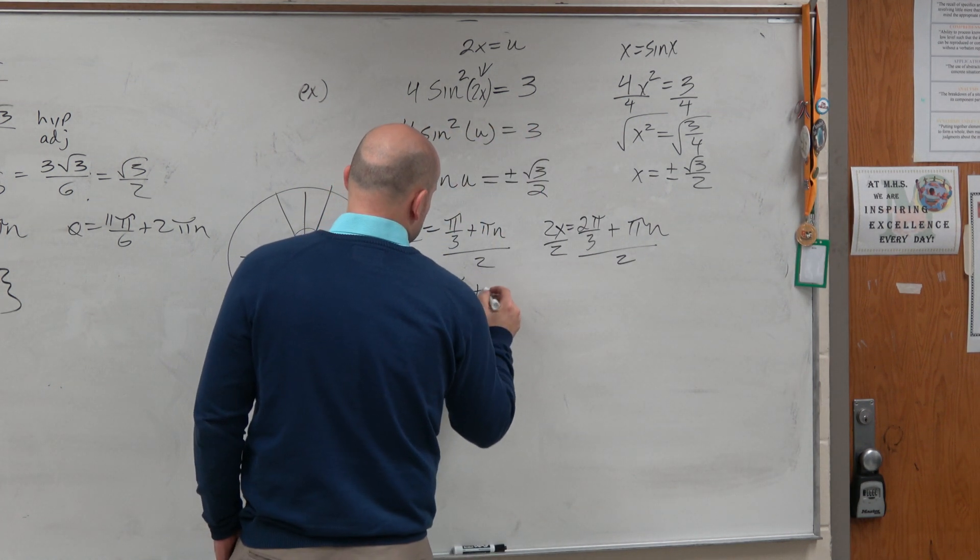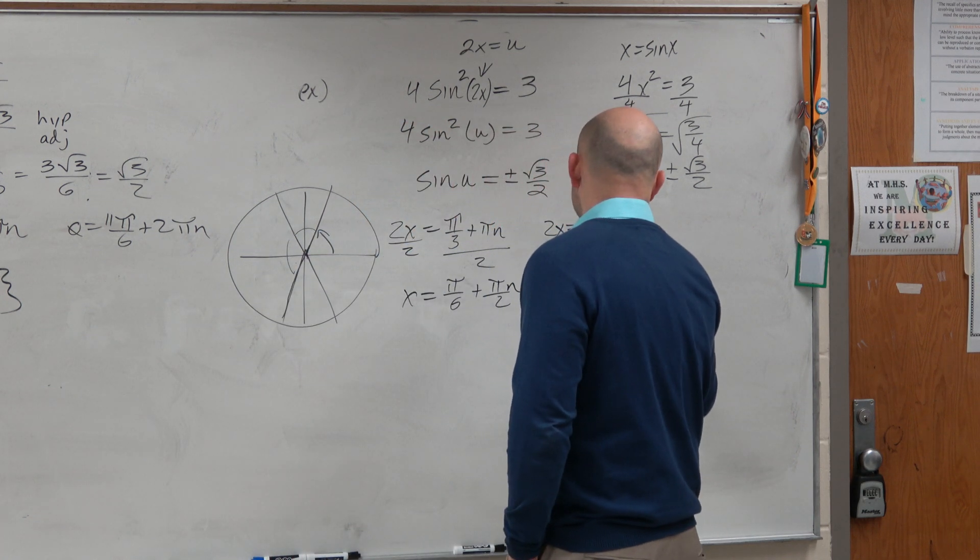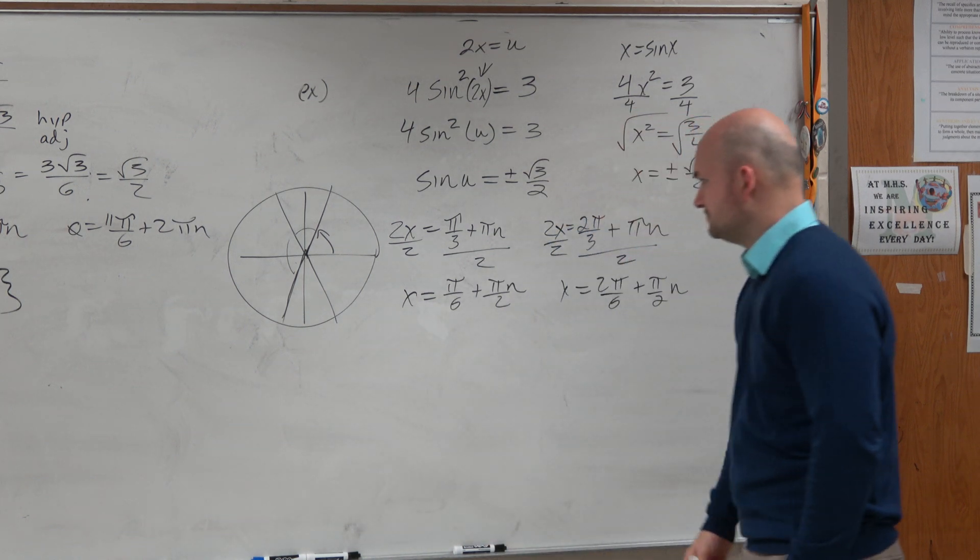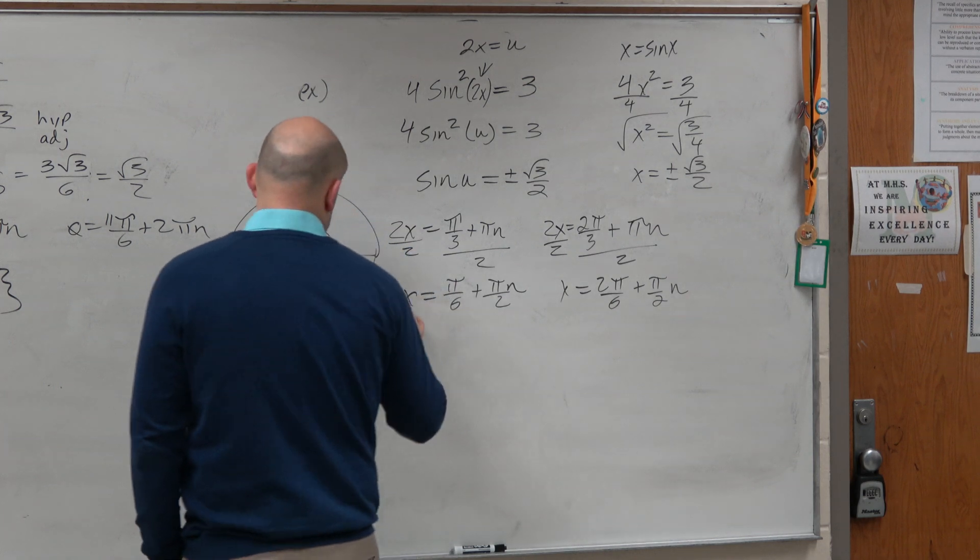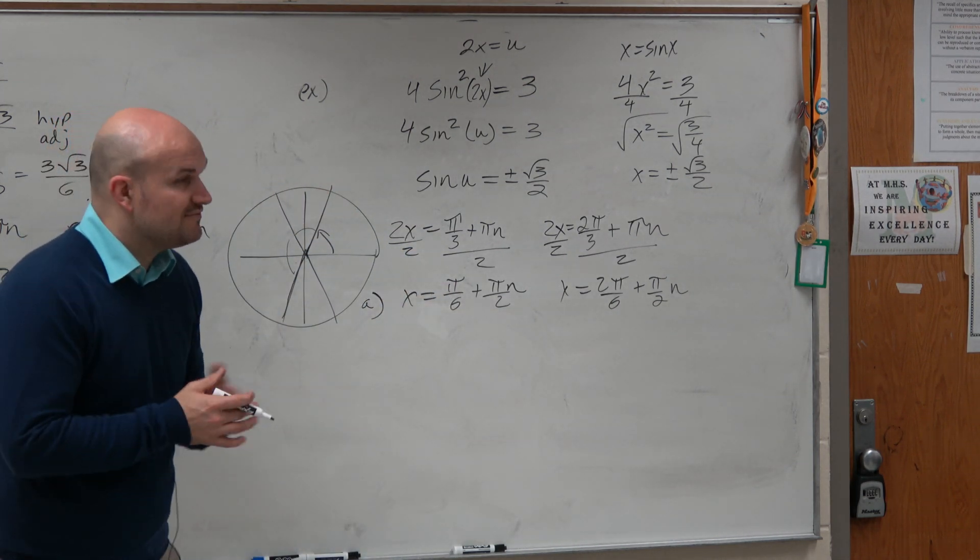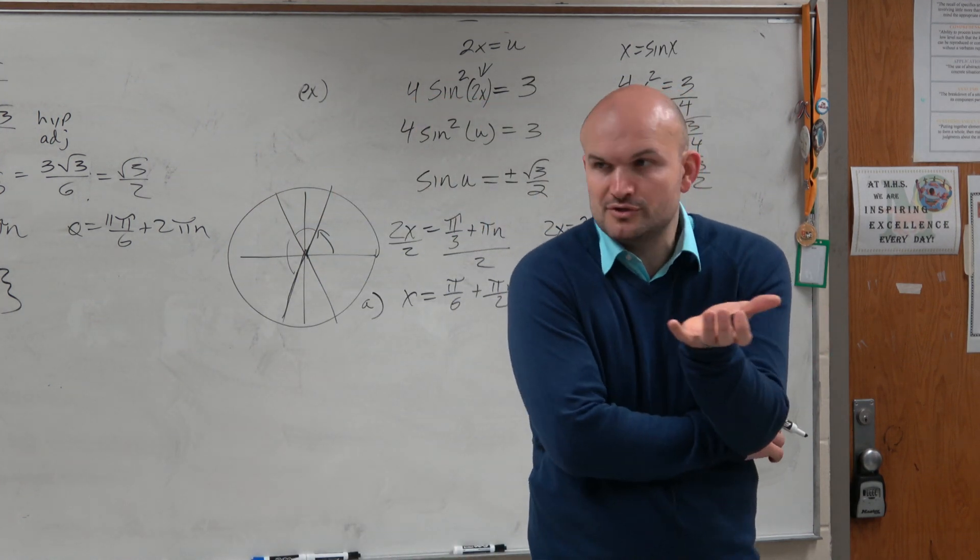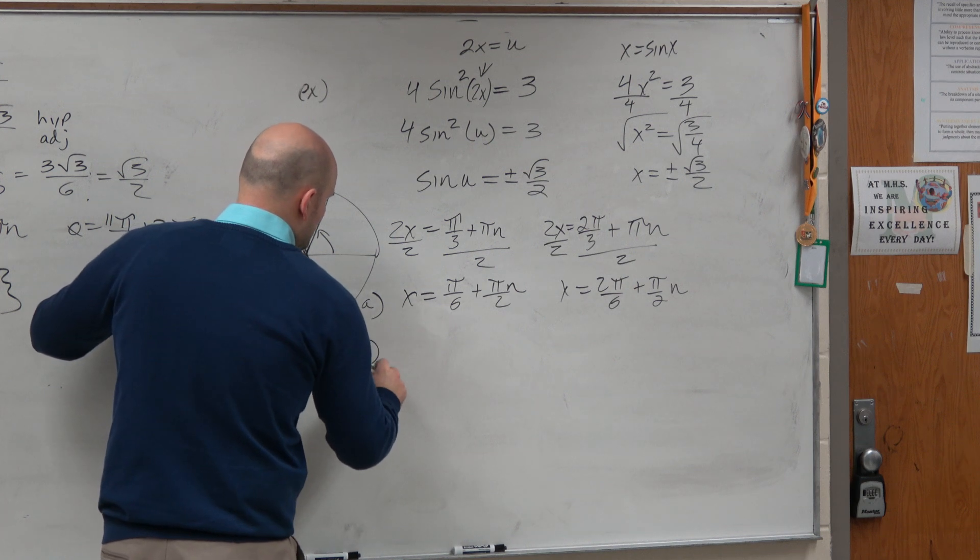So when we solve this, we get x equals π over 6 plus π/2 times n. OK. So this is all solutions. Now, what if I said find the solutions between 0 and 2π? And if you guys remember last class period, I think the easiest thing to do from here is just pick values of n.